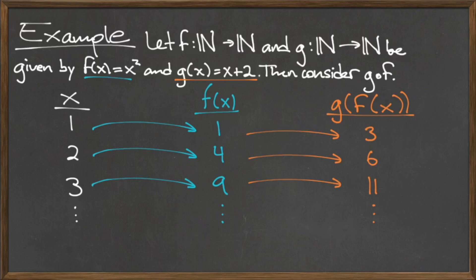When x is equal to 3, f of 3 is 3 squared, which is 9, which we plug into g. g of 9 is equal to 9 plus 2, which is 11. So the composition g compose f of 3 is 11.